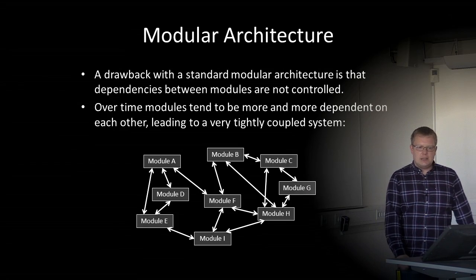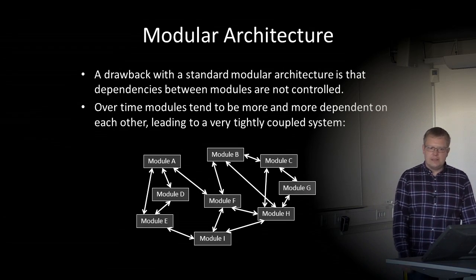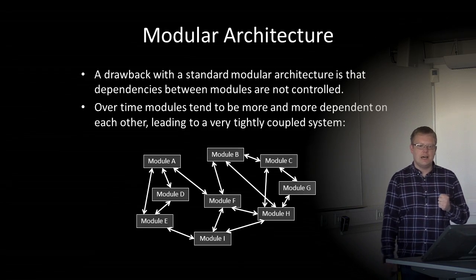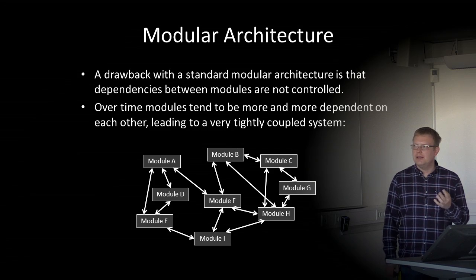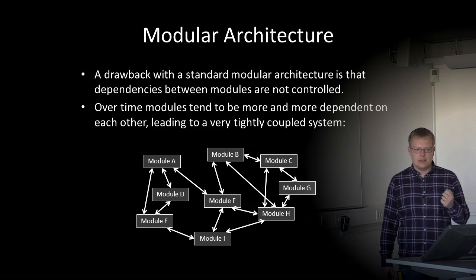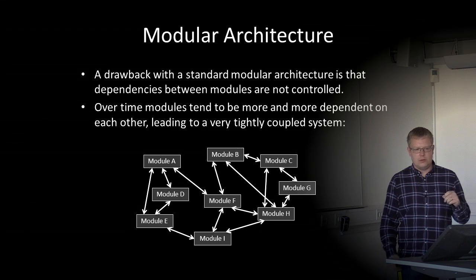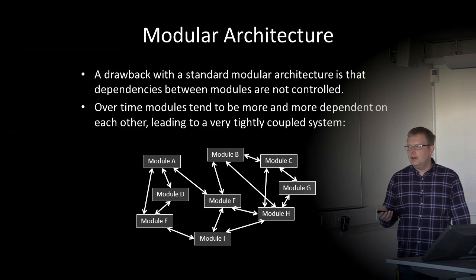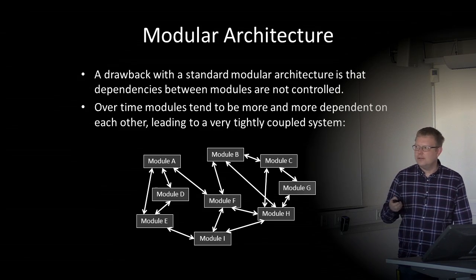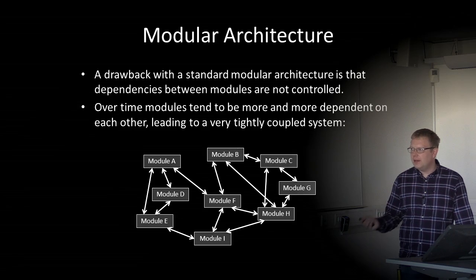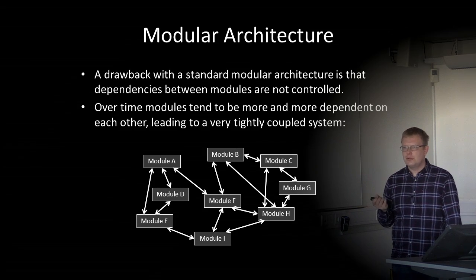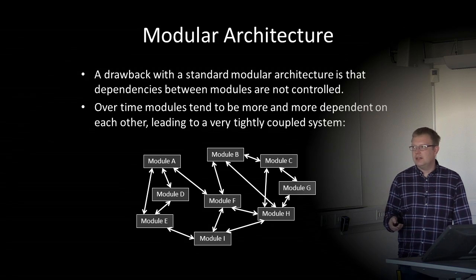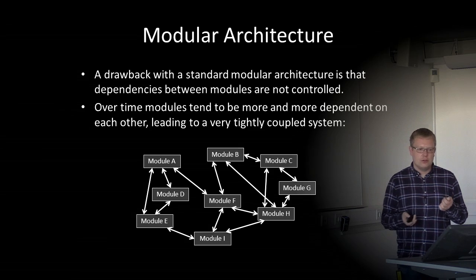The drawback with a standard modular architecture is that dependencies between modules are not controlled. Over time, modules tend to become more and more dependent on each other, leading to a very tightly coupled system. Even with a modular system, we can have a lot of dependencies between modules instead of between individual classes — and we still have a tightly coupled system, which is something we want to avoid.